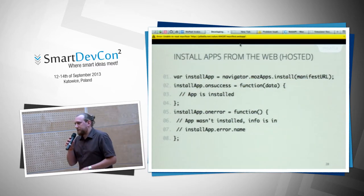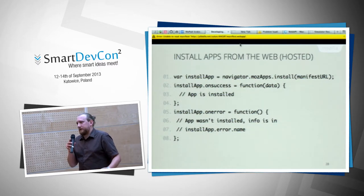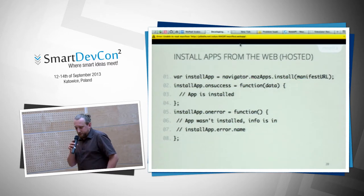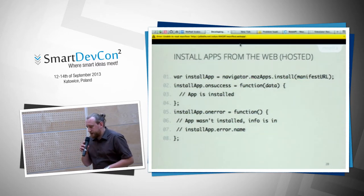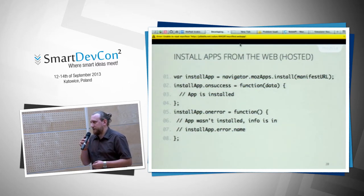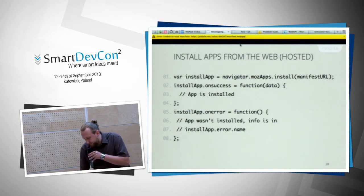Besides the marketplace, you can host an application on your own website. You can add an install button — on click, it installs the application on the user's phone. It will be a hosted app since it's not signed by the marketplace, but it works well. You don't have to spam users with pop-ups like some Android sites do.